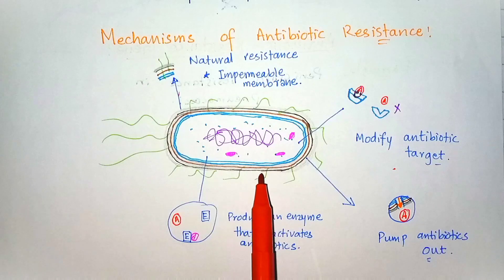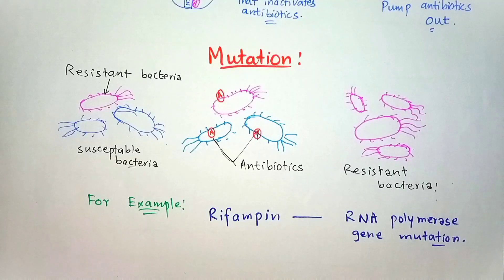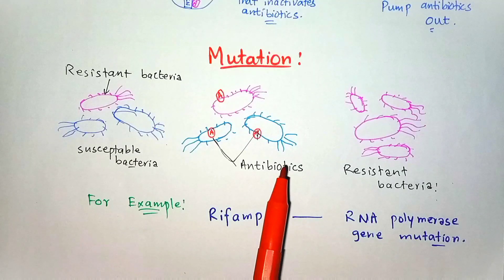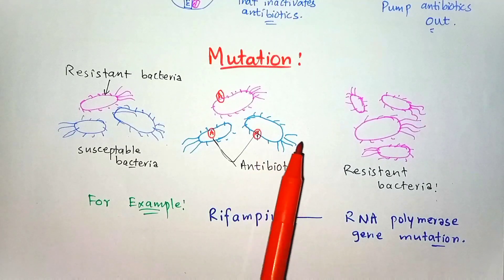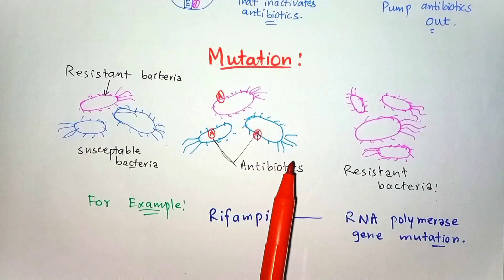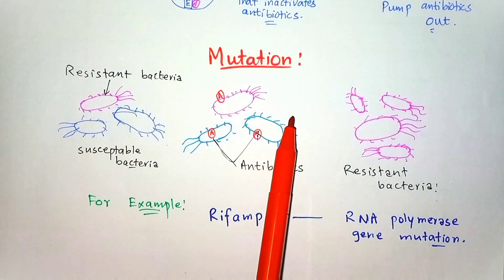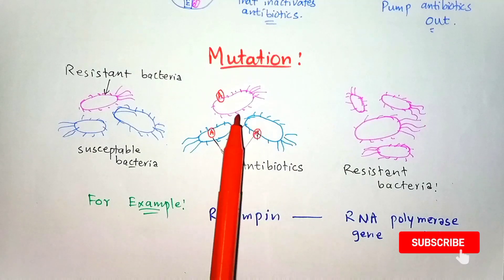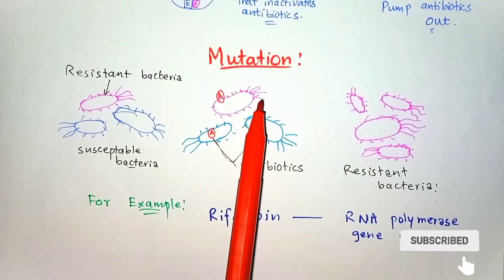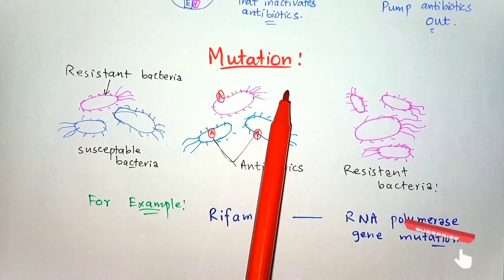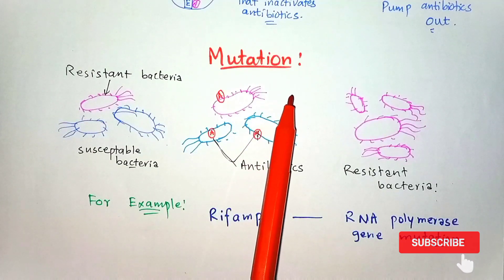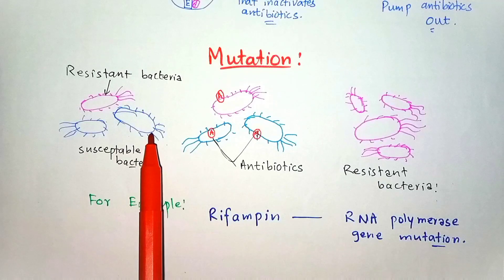Now moving toward the ways that bacteria acquire resistance. There are two main ways: one is through mutations that occur in the DNA of the cell during replication.